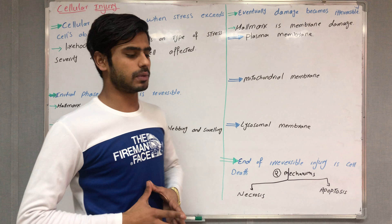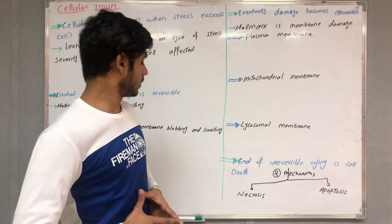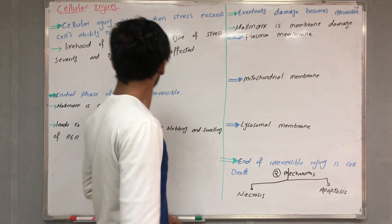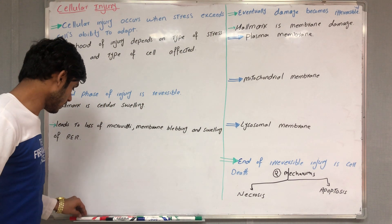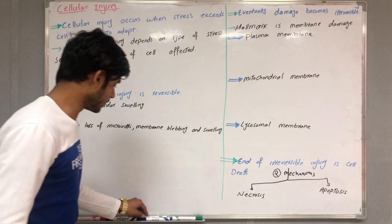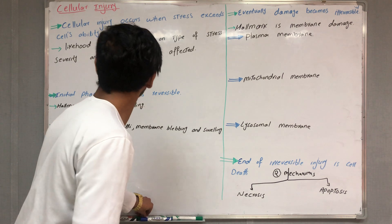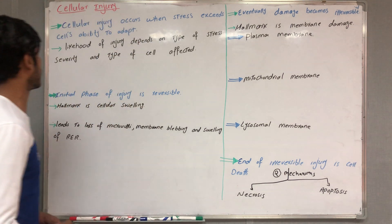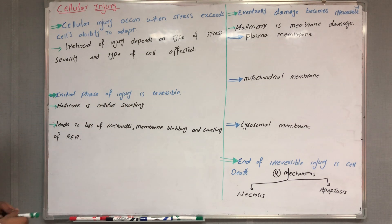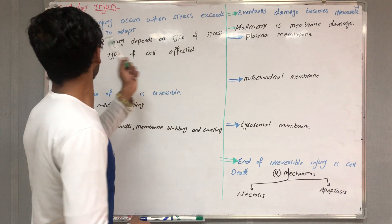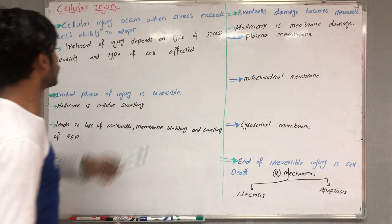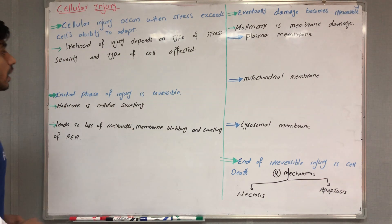Hi guys, my name is Jamil Ahmad and today we're going to discuss cellular injury. Cellular injury occurs when stress exceeds the cell's ability to adapt.